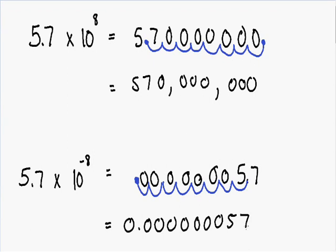Notice how with a negative exponent, we had a really small final answer, and with a positive exponent, we had a really large final answer. So that is a good way to double-check if you actually moved the decimal point in the right direction.